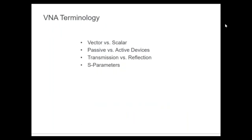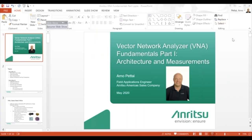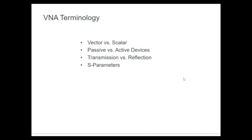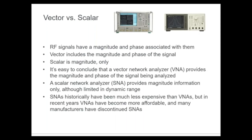Now we'll go through some basic terminology. We talk about the VNA as a vector network analyzer — in the past there were scalar network analyzers as well. RF signals have not only magnitude but also phase associated with them. Vector captures that information — magnitude and phase. A scalar is magnitude only. The VNA measures both magnitude and phase. VNAs have largely replaced scalar network analyzers, becoming more affordable while making many more measurements.